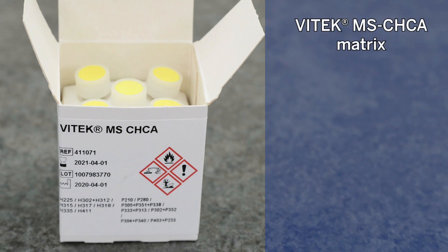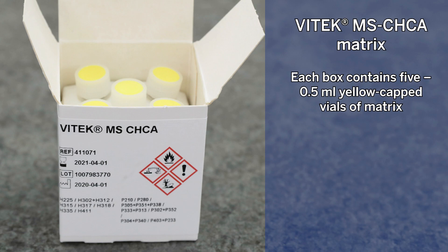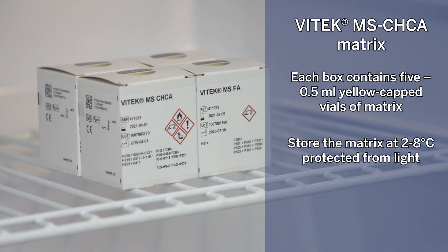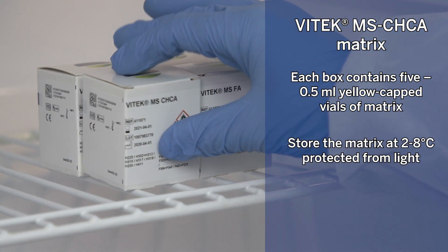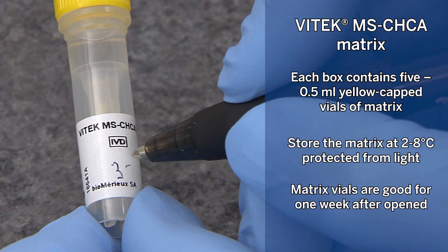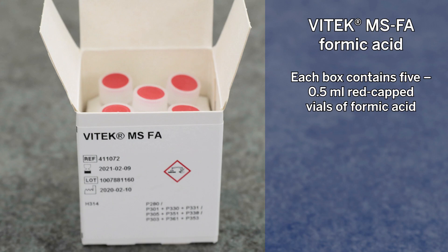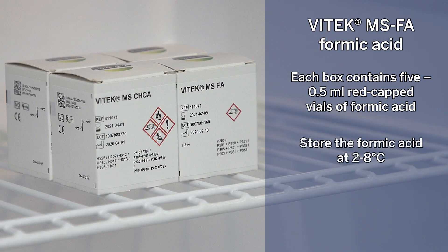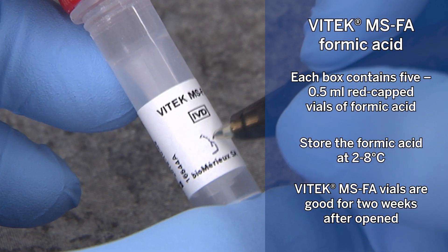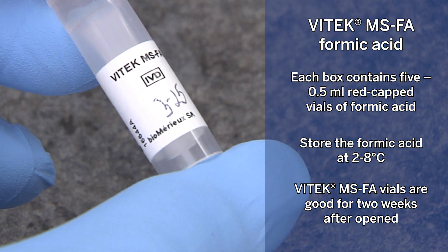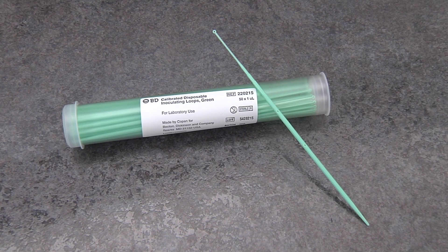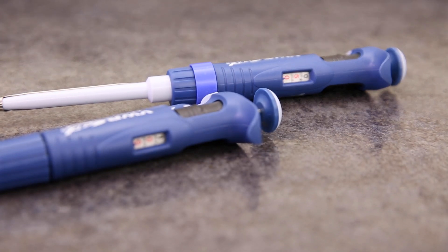Vitek-MS CHCA matrix: each box contains 5 vials of 0.5 milliliter yellow-capped matrix. Store the matrix at 2 to 8 degrees Celsius protected from light. Matrix vials are good for one week after opened. Vitek-MS FA formic acid: each box contains 5 vials of 0.5 milliliter red-capped formic acid. Store the formic acid at 2 to 8 degrees Celsius. Formic acid vials are good for two weeks after opened. Also needed: 1-microliter calibrated loops and precision pipetters to deliver 0.5 and 1 microliter.